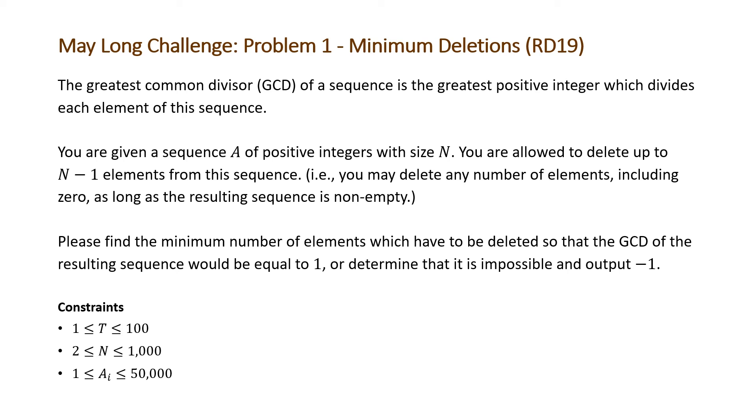The question asks to please find the minimum number of elements which have to be deleted so that the GCD of the resulting sequence would be equal to 1, or determine that it is impossible to do so and output negative 1. Note that the constraints for this problem are T, the number of test cases that will be given, is going to be between 1 and 100; N, the length of each sequence or array that we're given, is going to be between 2 and 1000; and the value of each element in our sequence A is going to be between 1 and 50,000.